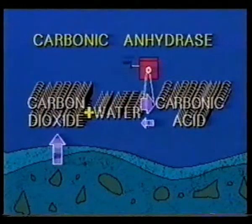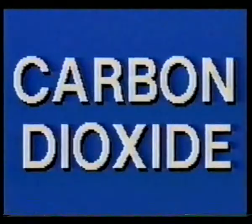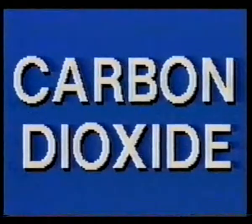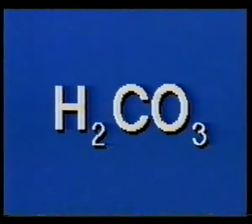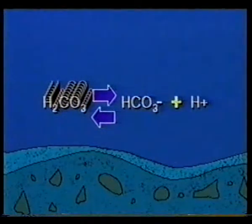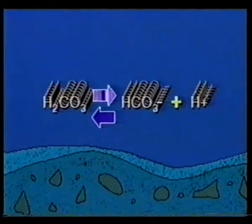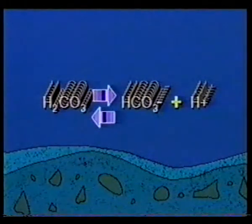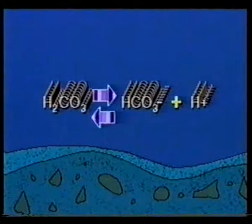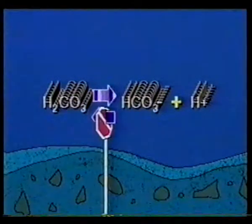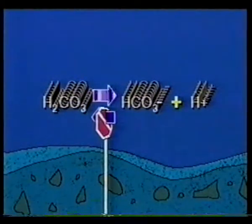Now watch how the body tinkers ingeniously with the law of mass action to build an efficient system. Carbonic acid is unstable in water and quickly reacts to produce bicarbonate ions and hydrogen ions. The law of mass action should come into play to balance the reaction — but the body deliberately prevents this.